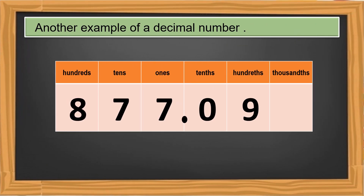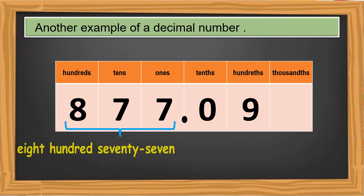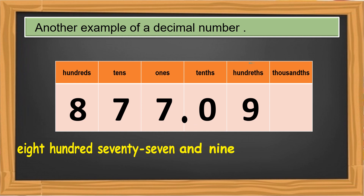Another example of a decimal number. First, write the whole number. Then write 'and' for the decimal, then the number on the decimal part. Don't forget the place value of the last digit. This number reads as eight-hundred-seventy-seven and nine-hundredths.